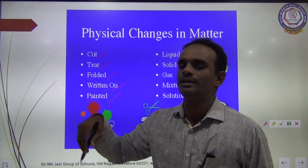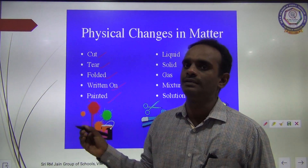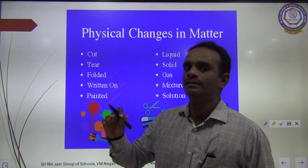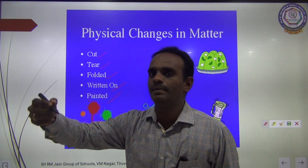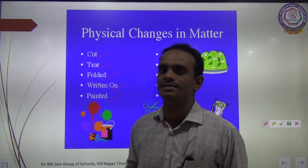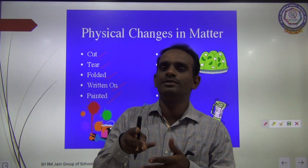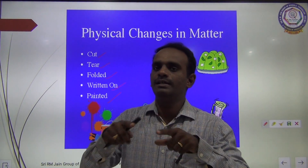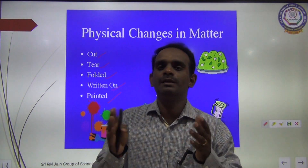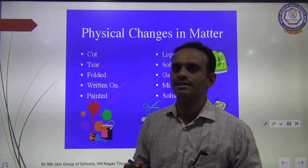You have a notebook in your hand. On that notebook, you are writing something. Before writing, that notebook is empty. After that, you are writing something, meaning that notebook has written paper — that change is said to be a physical change. You have a 5-meter cloth. With the help of scissors, you can cut the cloth into two pieces — a 3-meter and a 2-meter piece. That change comes under physical change.